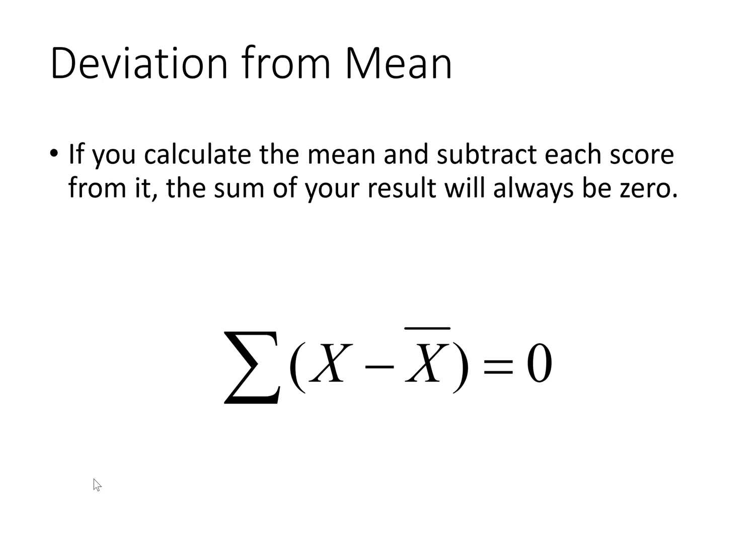A completely useless measure of variability is the deviation from the mean. So the deviation from the mean is basically if you take each score, subtract the mean, and then add up those deviation scores from the mean, it will always equal zero, so that's not typically useful.